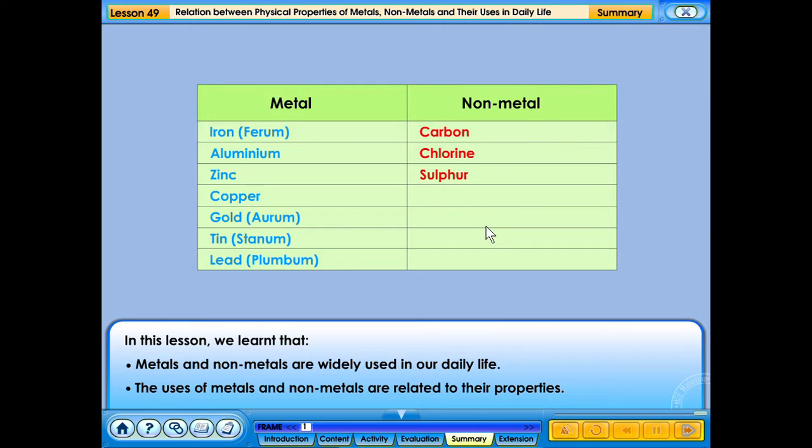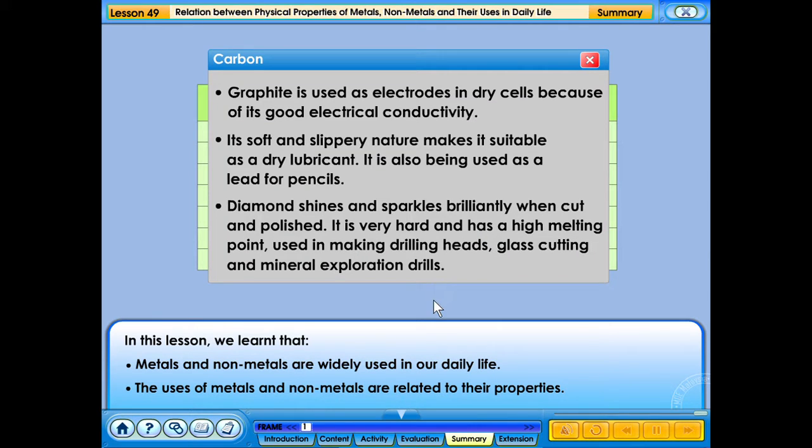Graphite is used as electrodes in dry cells because of its good electrical conductivity. Its soft and slippery nature makes it suitable as a dry lubricant. It is also being used as a lead for pencils.